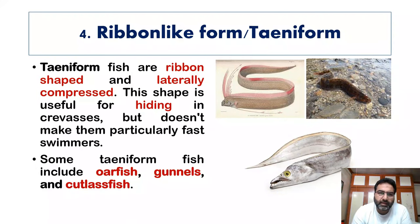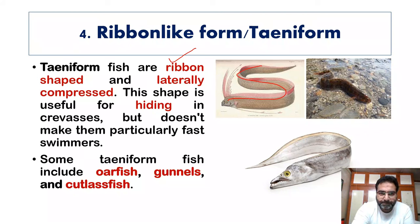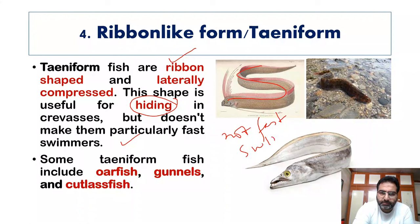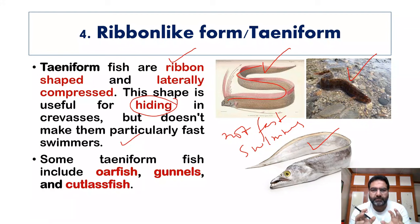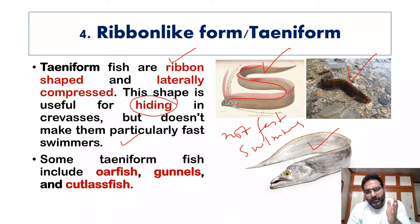Another form is the taeniform, also regarded as the ribbon-like form. Taeniform fish are ribbon-shaped and laterally compressed. This shape is useful for hiding in crevices but does not make them particularly fast swimmers. Examples include oarfish, gunnels, and cutlassfish. To summarize the distinction: serpentine form is eel-like with a cylindrical body, filiform is thread-like, and taeniform is ribbon-like.